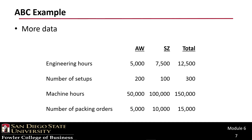Here's more data they've gathered. The number of engineering hours required for AW and SZ are 5,000 and 7,500 respectively. The number of setups are 200 and 100. The number of machine hours are 50,000 and 100,000. And the number of packing orders is 5,000 and 10,000.